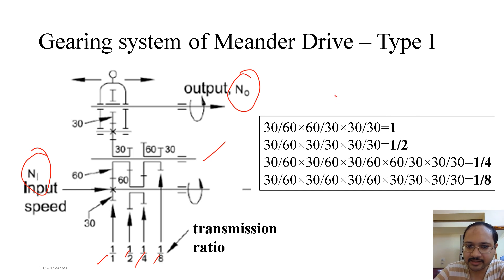Now this is the table of how we achieve these four transmission ratios. Let us discuss the first one. If all the cluster gears are meshed only on the left-hand side, we can see the first one is 30 by 60, that is meshed, then 60 by 30, then 30 by 30, that is exactly what we see here.